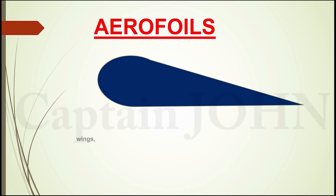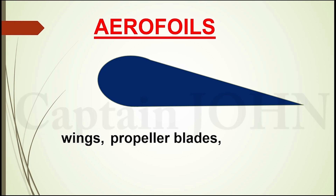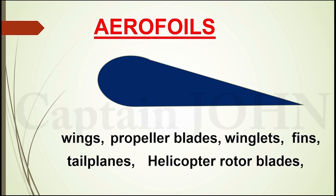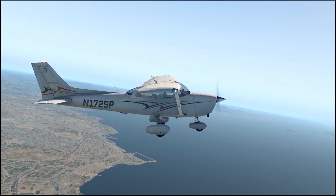Airfoils generate forces perpendicular to the airflow as wings or propeller blades in aircraft. Examples include wings, propeller blades, winglets, fins, vertical tail, horizontal tail planes, and helicopter rotor blades. Let's examine these on the plane and see how similar they are.